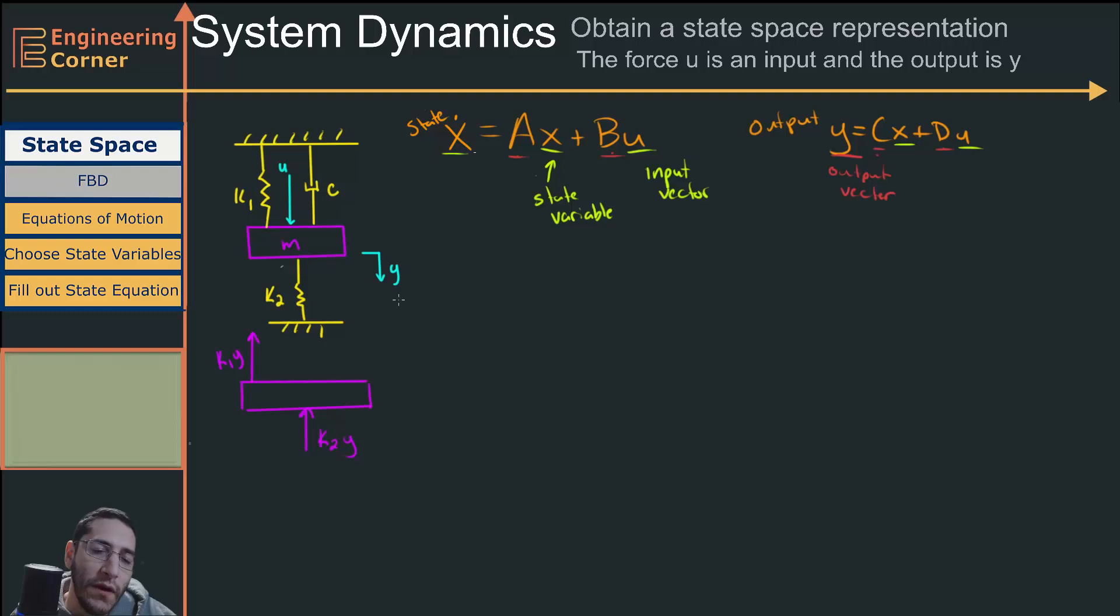And then c, well if I'm moving downward, my velocity is down. So it's going to oppose the relative velocity and have a force of c times its velocity, which is y dot. Now I still need to put in my applied force, which is u. This is my free body diagram.